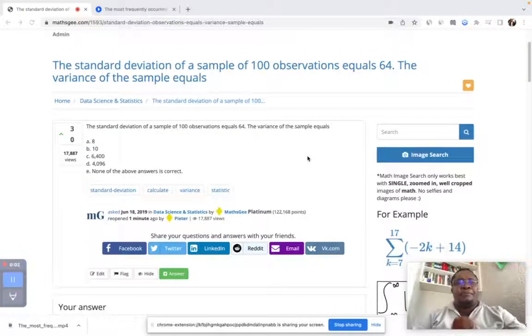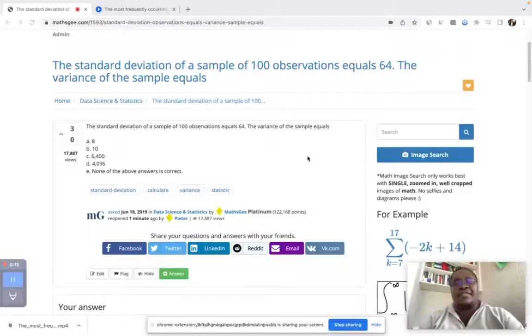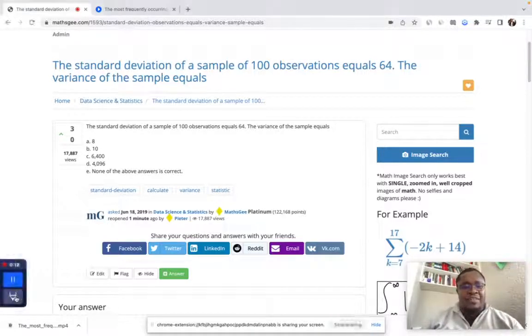Someone asked this question on MathsGee.com: if the standard deviation of a sample of 100 observations equals 64, what is the variance of this sample? This is a very straightforward question.